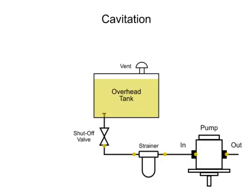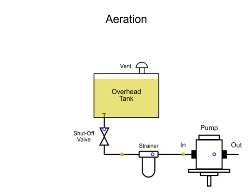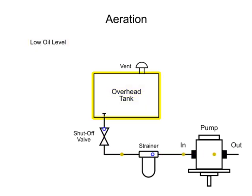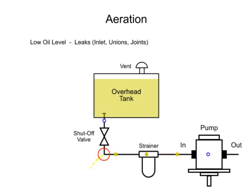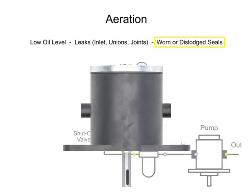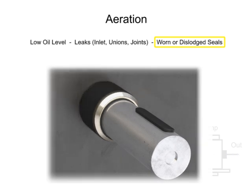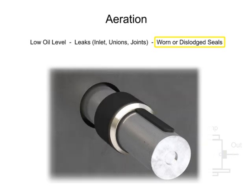Another form of cavitation is called aeration and is caused by air entering the oil stream. This can occur for a variety of reasons, including a low oil level in the reservoir, leaks in the inlet plumbing line especially at unions and joints, and worn or dislodged seals in other hydraulic components such as pumps, cylinders, or valves.